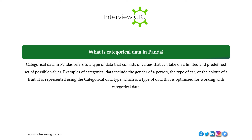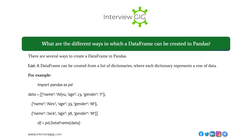Categorical data in pandas refers to a type of data that consists of values that can take on a limited and predefined set of possible values. Examples of categorical data include the gender of a person, the type of car, or the color of a fruit. It is represented using the Categorical data type, which is optimized for working with categorical data.